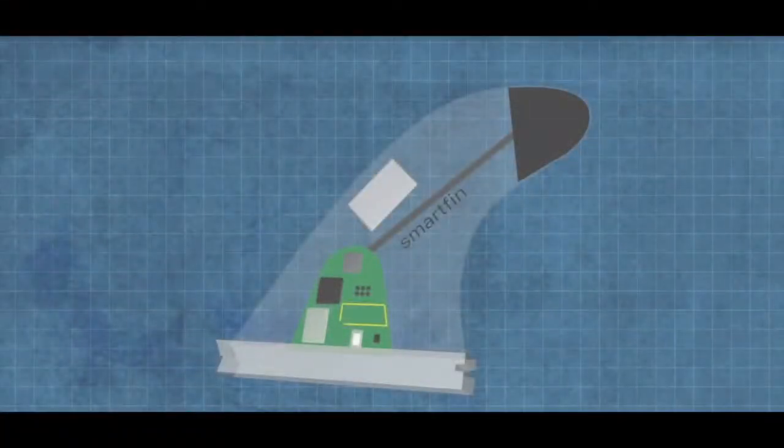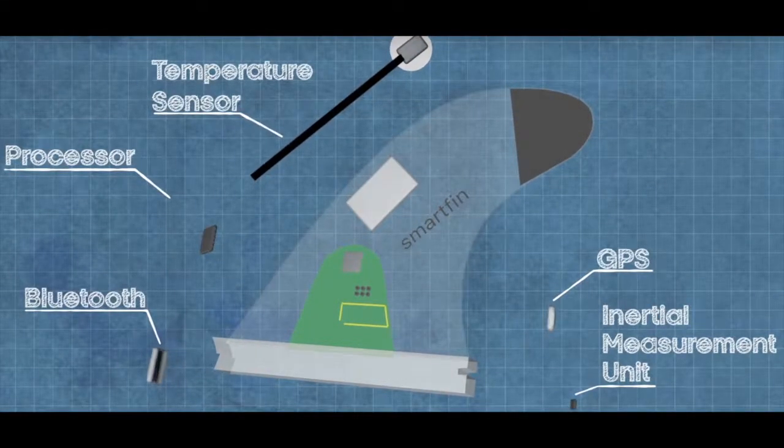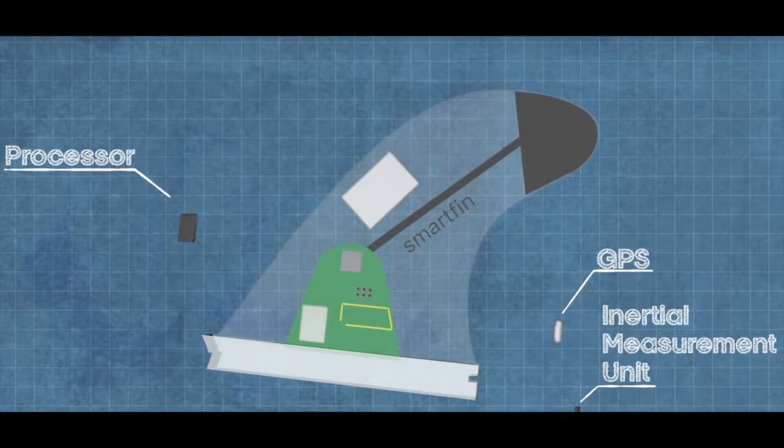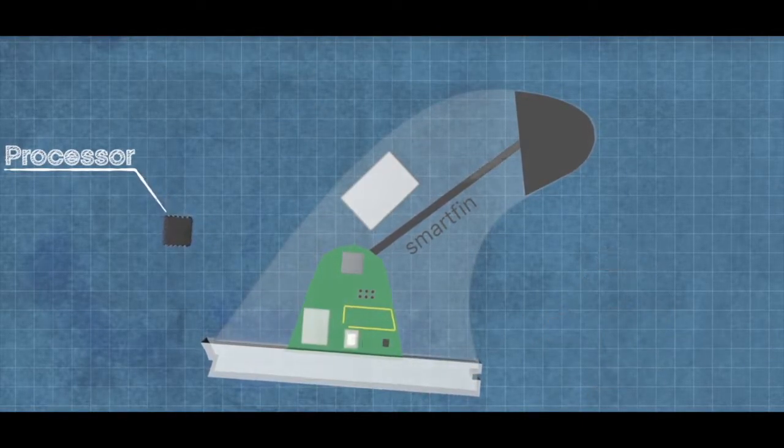The SmartFin contains Bluetooth, GPS, a temperature sensor, and an inertial measurement unit. The IMU allows the SmartFin to collect data related to acceleration, angular velocity, and compass heading.